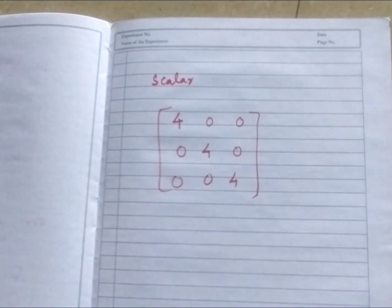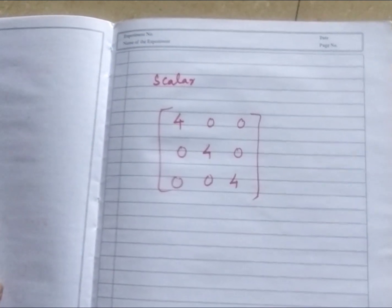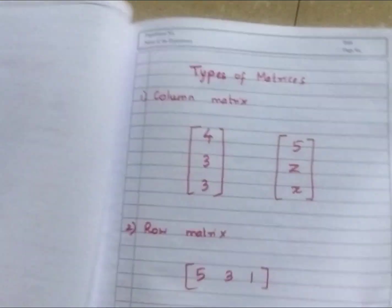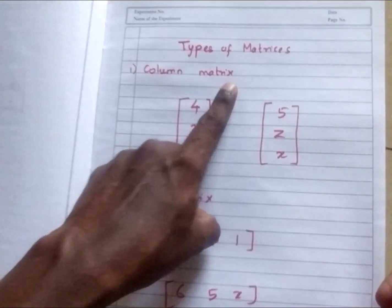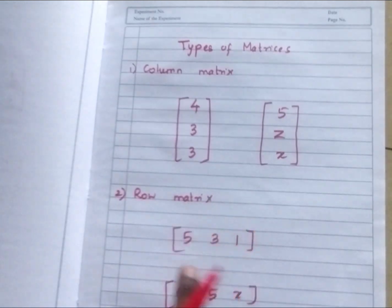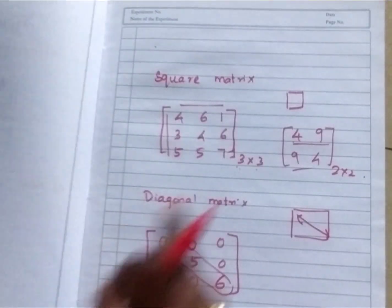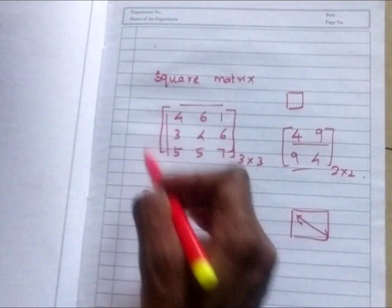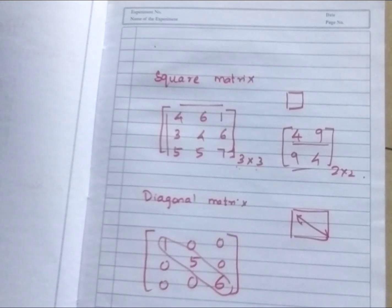So shall we revise everything one time? So first thing is column matrix. That means only in column that will be. Then row matrix is sleeping like this. Then next is square matrix. That is the row and column number should be same. All the sides are equal.